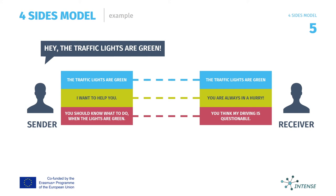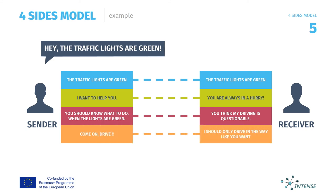The relationship layer, number three. Maybe the sender wanted to say about the relationship that the receiver should know what to do when the traffic lights are green, and expressed a bit of annoyance about that. But the receiver may be even more angry because he or she understood it as: 'You think my driving is questionable.'